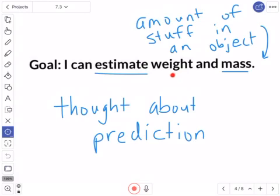And weight is just how much something weighs, and mass - that's the amount of stuff in an object. Like the more things that you have in an object, the more mass that it's going to have.